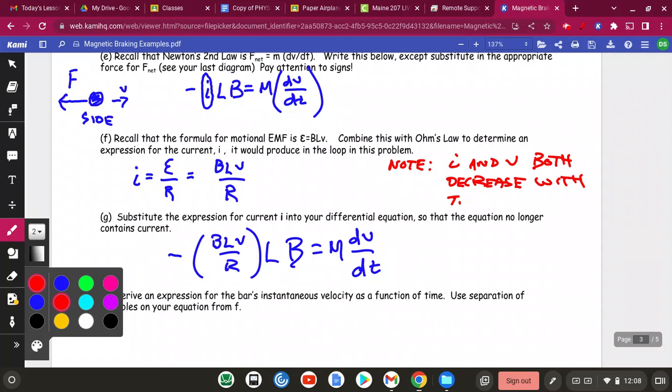So you see what we did is we kicked out i. The current is no longer a part of this. And now we have an equation that has a derivative of velocity in it with respect to time. And we have a velocity term that's showing up in it. So this is a differential equation. I'm going to make a couple notes here. I'm going to make a note that says, you'll see, note that i and v both decrease with time. Don't they? Right? Because when the rod slows down, as it slows down, there's going to be less EMF in the rod. If there's less EMF, there's going to be less current. And the rod slowing down. So this velocity is changing, too. So both i and v decrease with time.